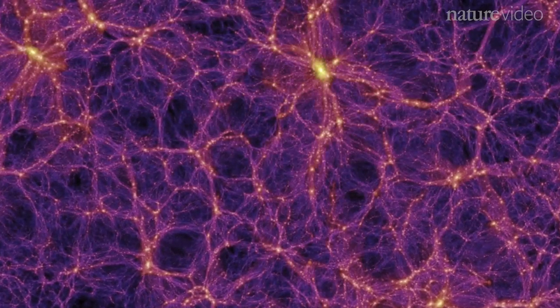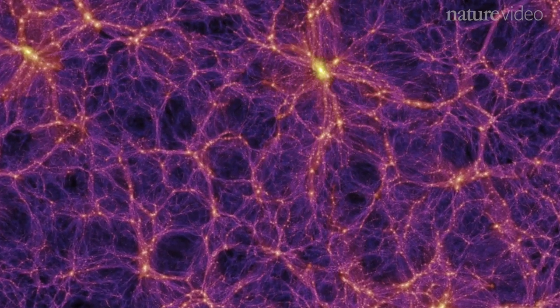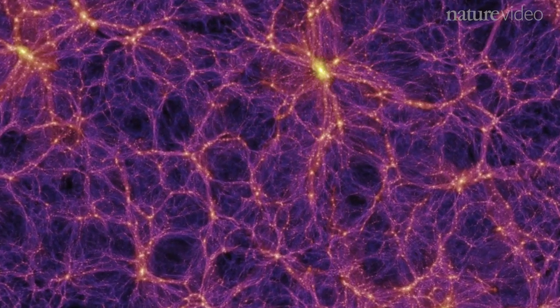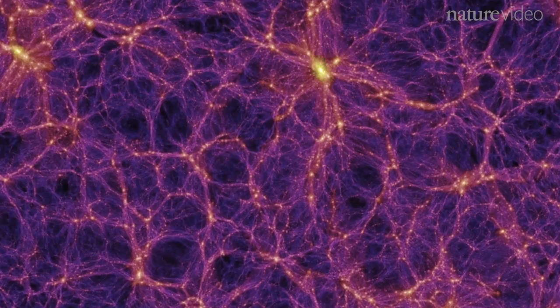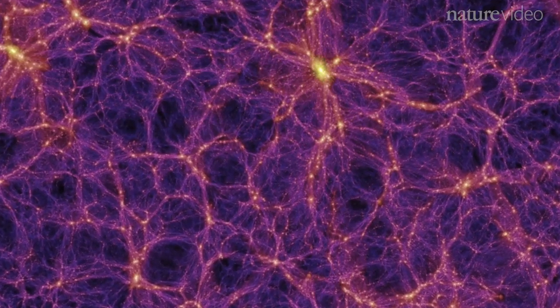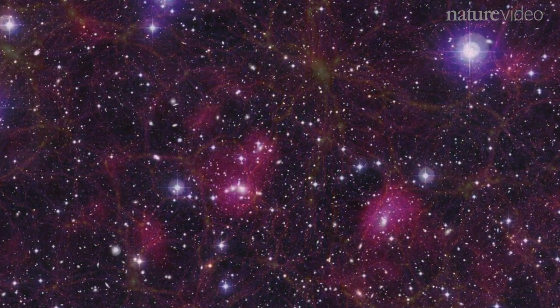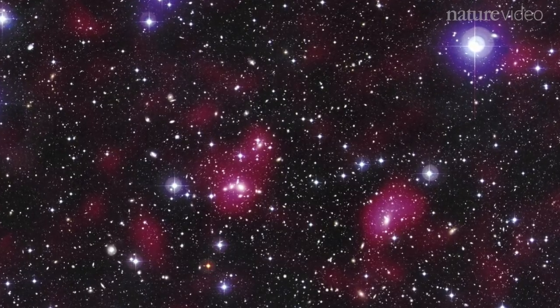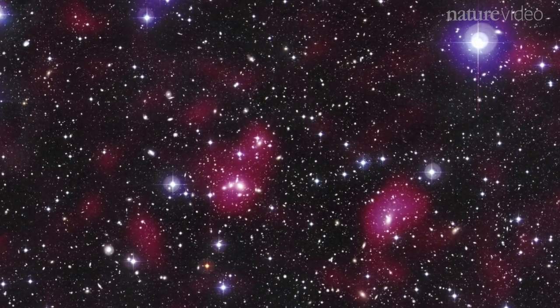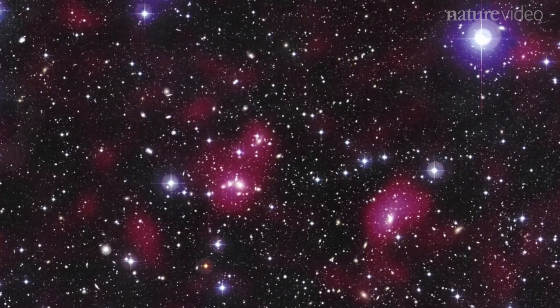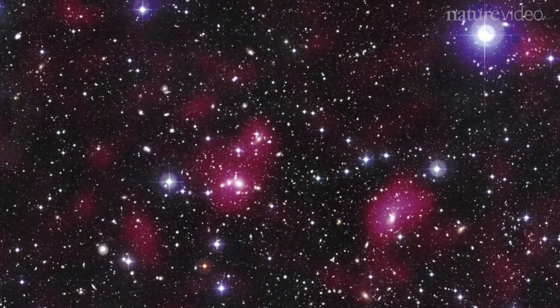The entire universe can be seen as an intricate network of galaxies, a cosmic web. Some areas are almost empty, dark voids. Others are densely packed with galaxies in regions known as superclusters. Superclusters are the biggest structures found in the universe, but scientists have struggled to define where one ends and another begins.